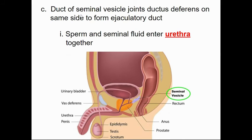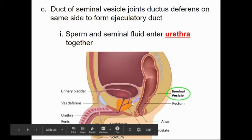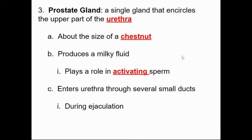The duct of the seminal vesicles joins with the vas deferens to form the ejaculatory duct. The vas deferens comes up over the bladder and down; the seminal vesicle joins it, adding fluid to form the semen in the ejaculatory duct. That passes through the prostate gland, joins the urethra, and continues down through the spongy or penile urethra of the penis.